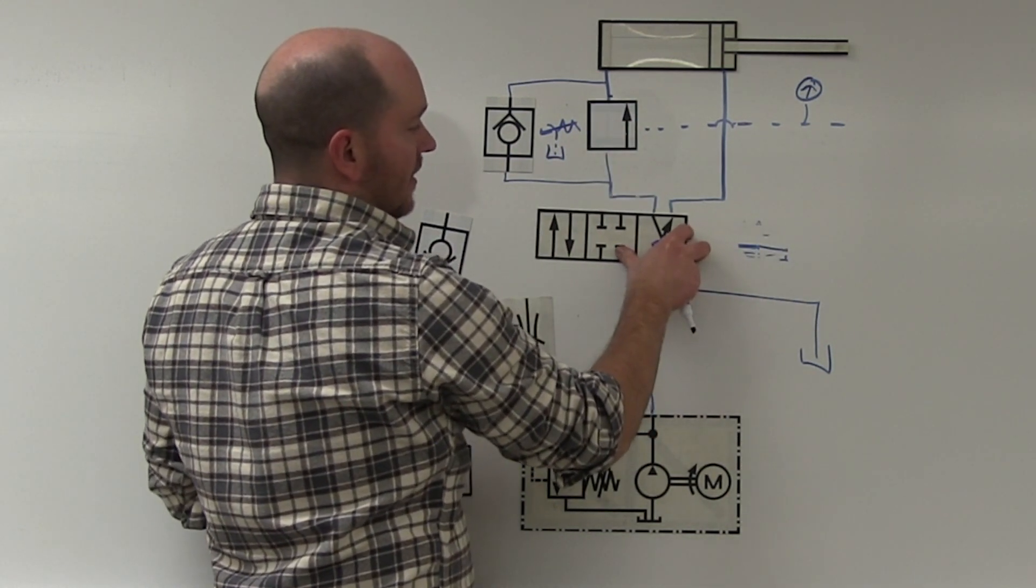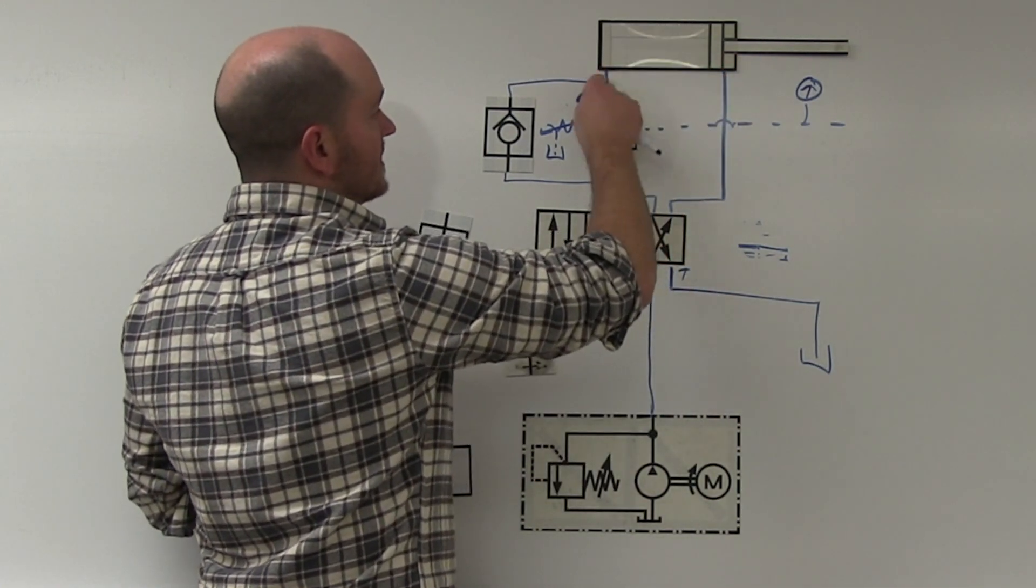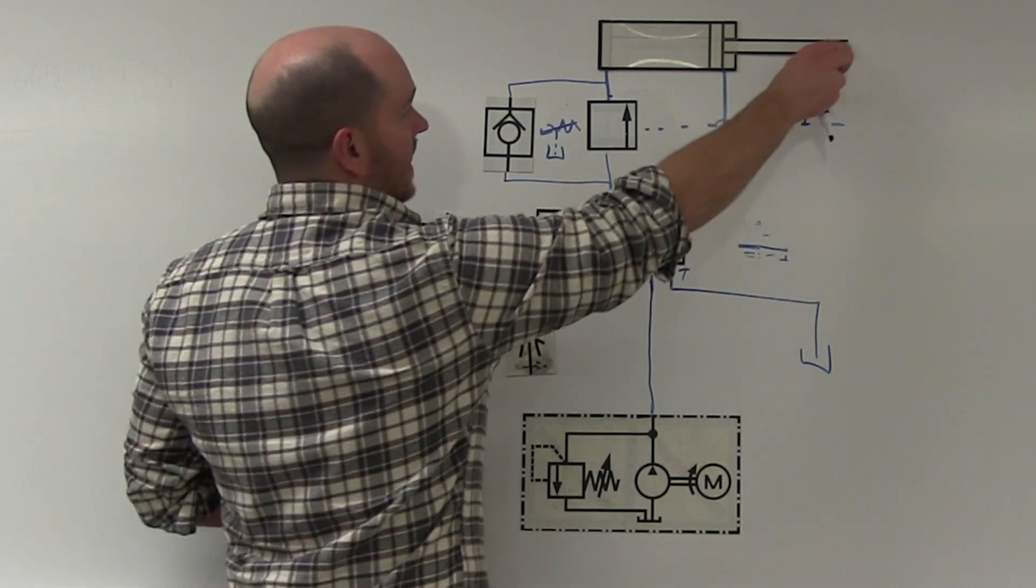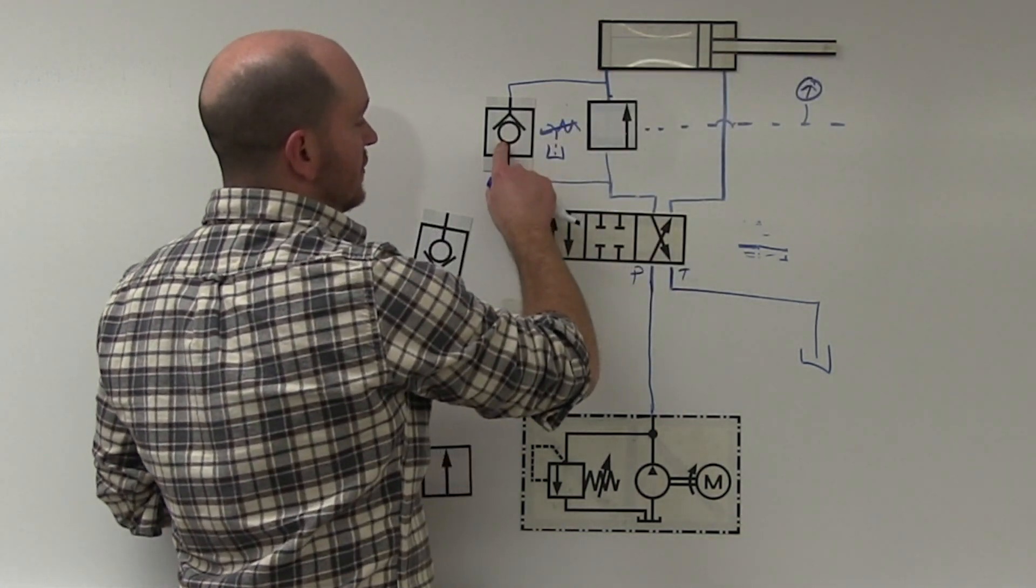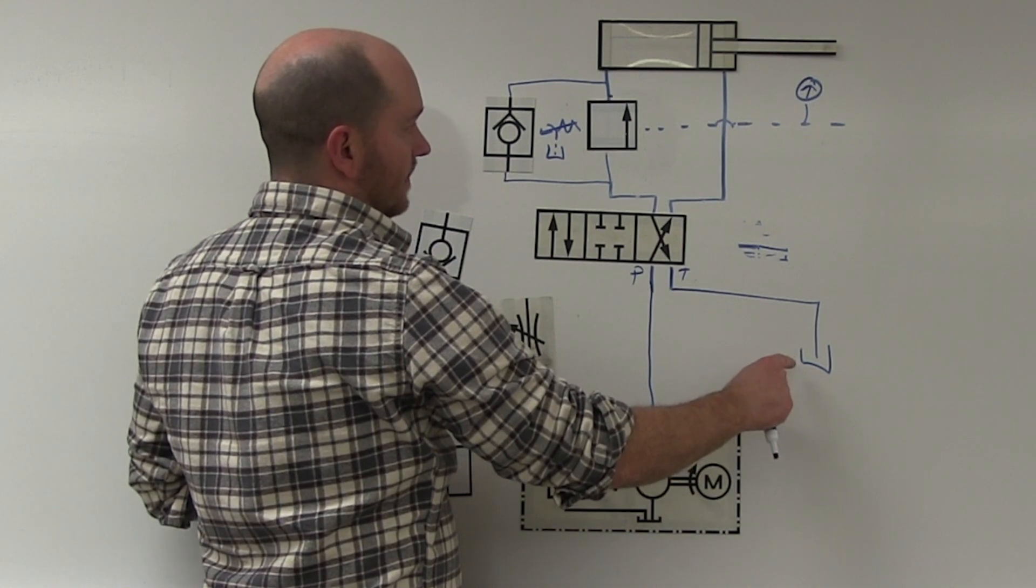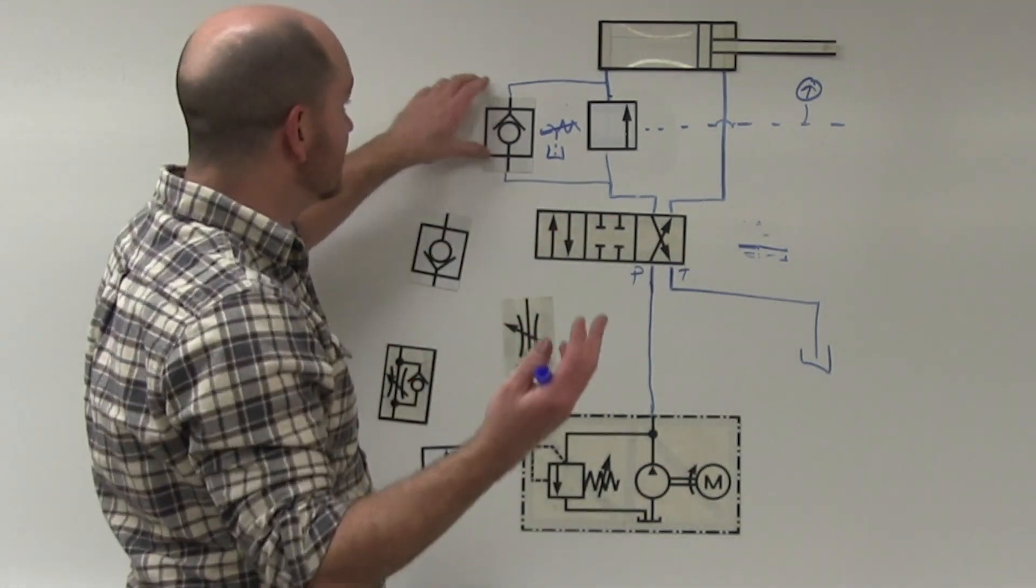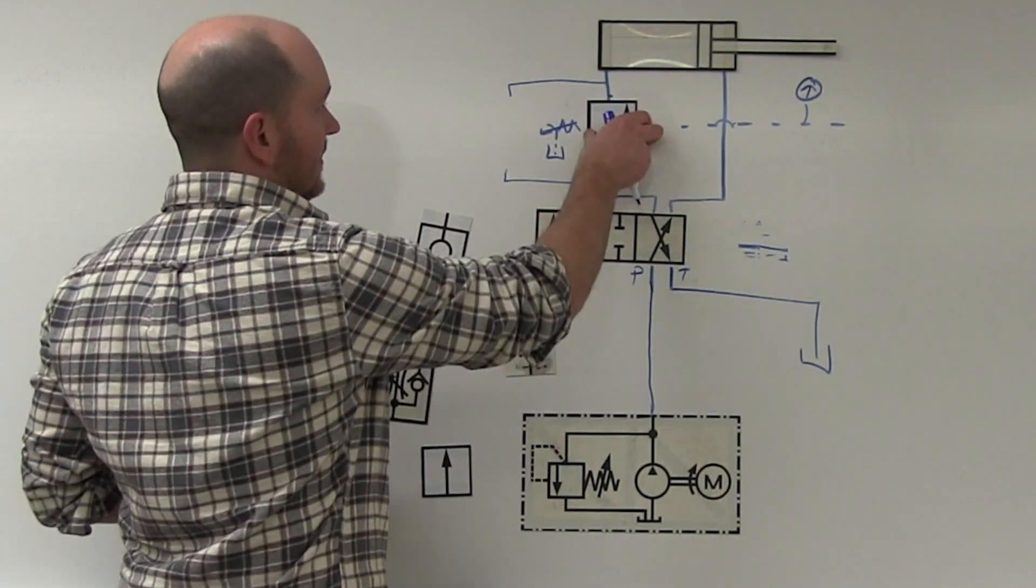The solenoid over here activates. Pressure comes up through here. This oil needs a path to exhaust back to tank. So as this goes, it goes through the bypass check valve, down to here, back down to tank. So in this case, we need that bypass check valve.